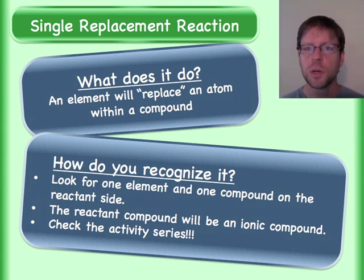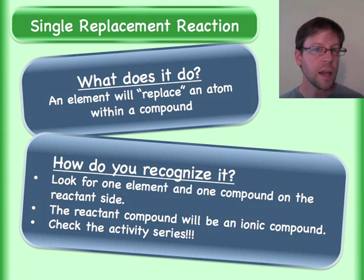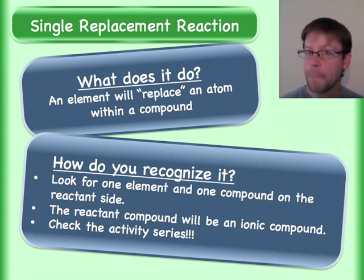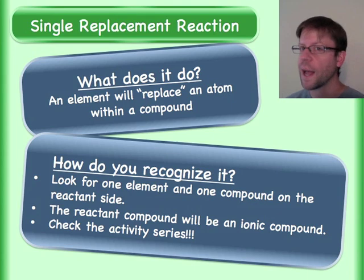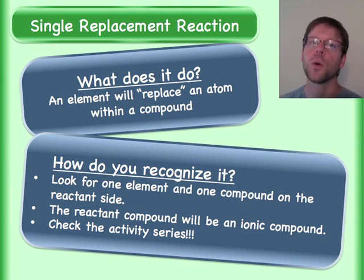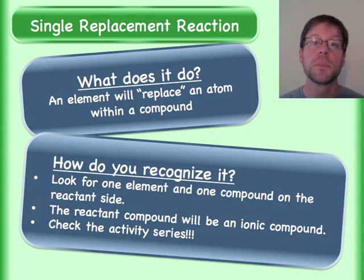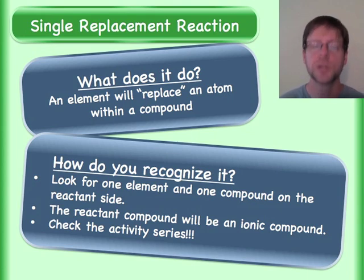To further help you along, those individual elements that you see should probably either be a metal or a halogen gas — so that's fluorine, chlorine, or bromine — and those are all going to be diatomic, so it's going to be Cl₂ or Br₂ and so on.